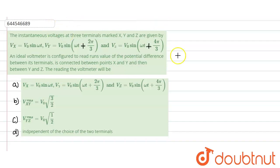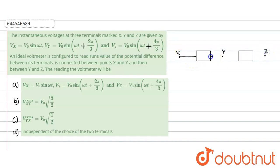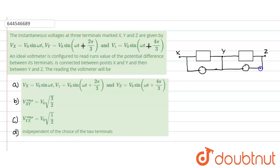So we have our system with points x, y, and z. Connecting the terminals, there would be a potential drop between x and y. We have an ideal voltmeter connected there — since it is ideal, its resistance is infinite, so no current flows through it. Another voltmeter is connected between y and z. The voltmeters would be measuring Vxy and Vyz respectively. We need to find the RMS readings.